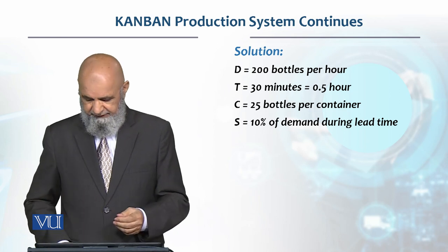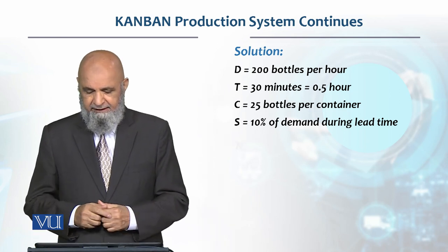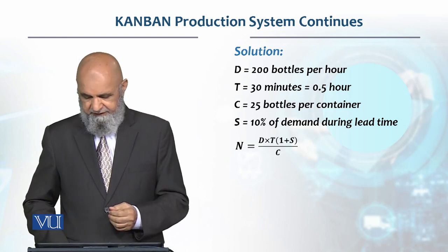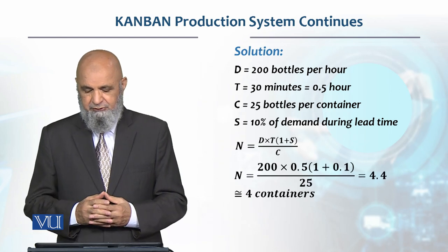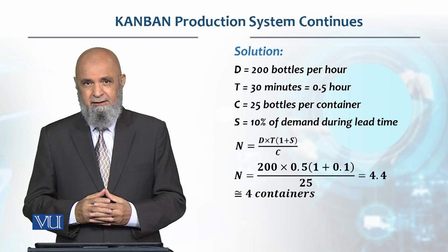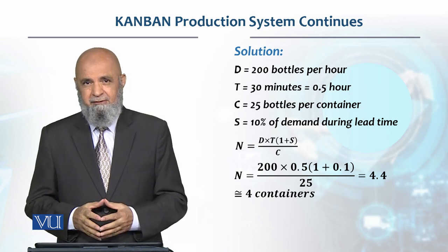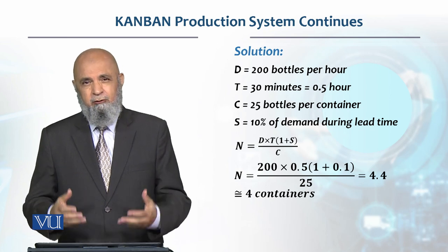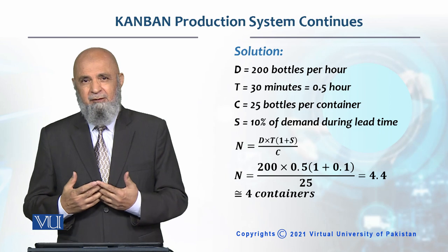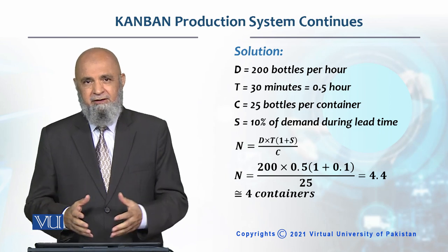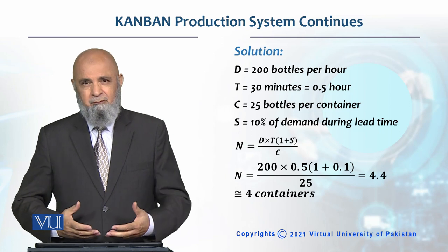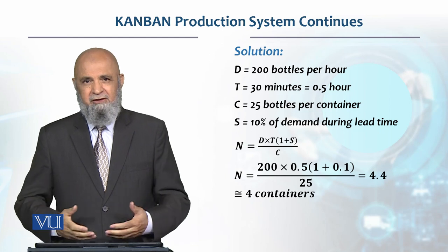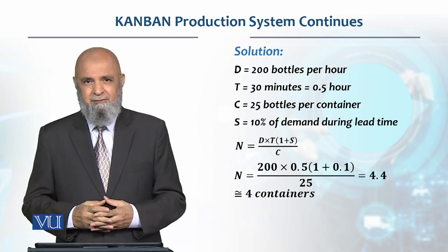Formula है: Number of Kanbans = (d × t × (1 + s)) / c। उसके basis के ऊपर अगर हम देखें तो it comes to 4.4 containers। उसको हम round off कर लें तो approximately 4 containers। तो इस basis के ऊपर हमें 4 Kanbans, 4 containers चाहिए, जिससे effectively और smoothly हम अपना production complete कर सकें।